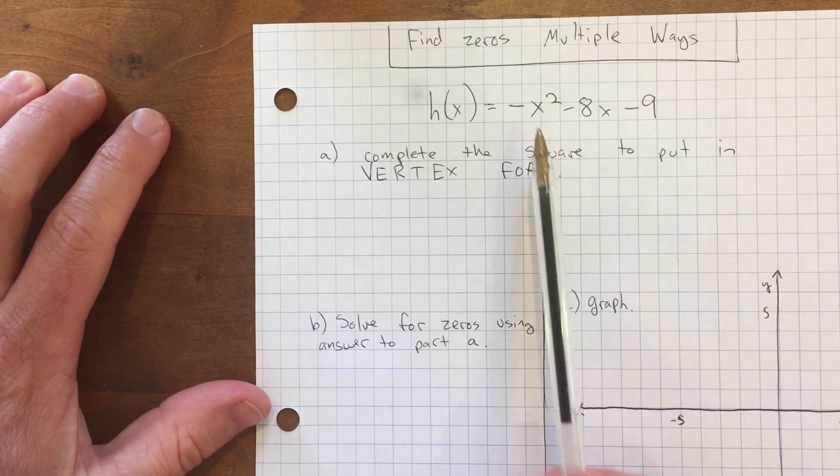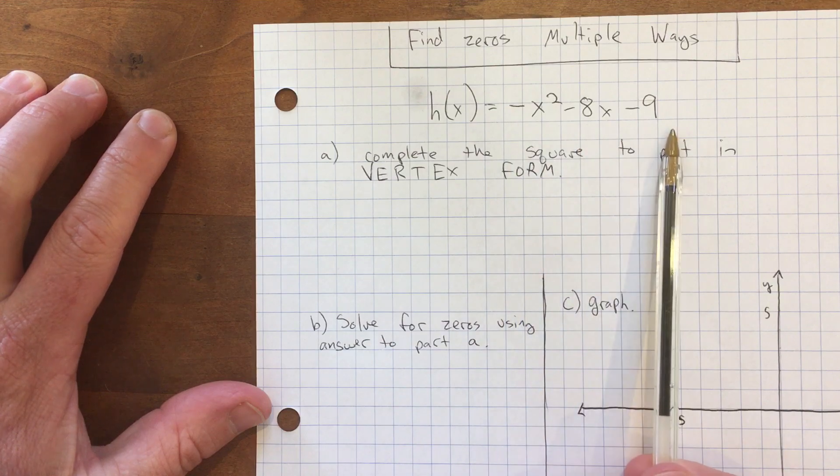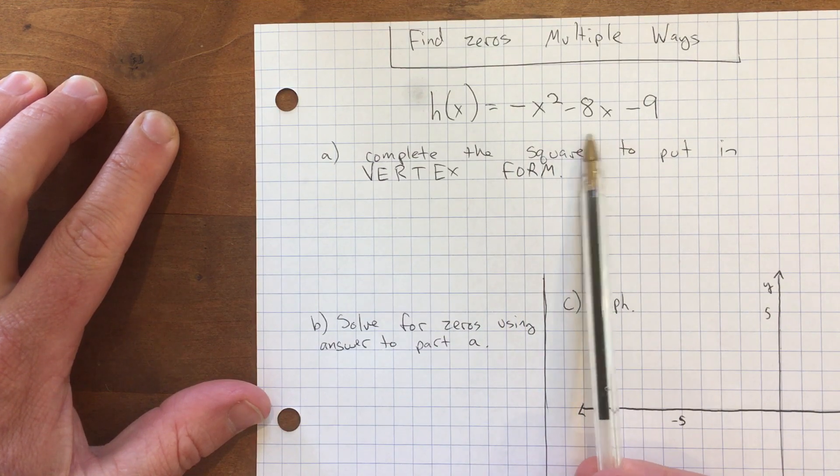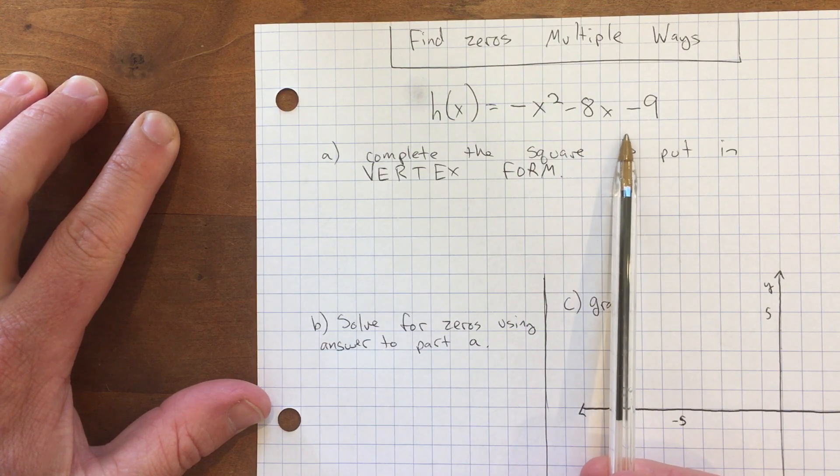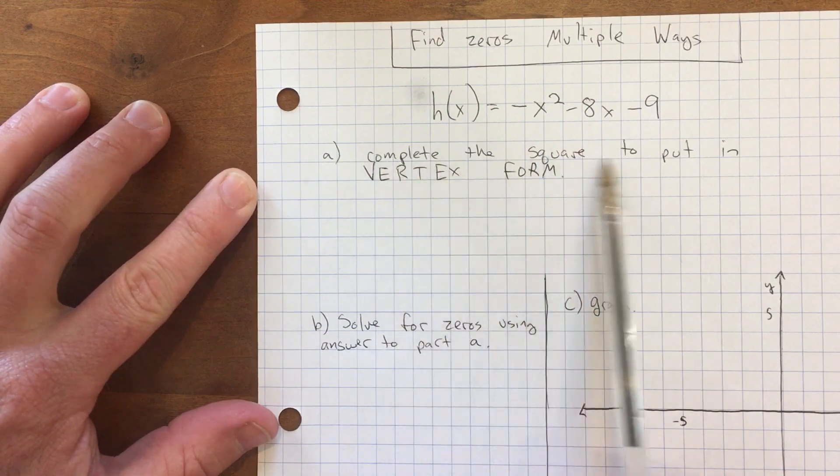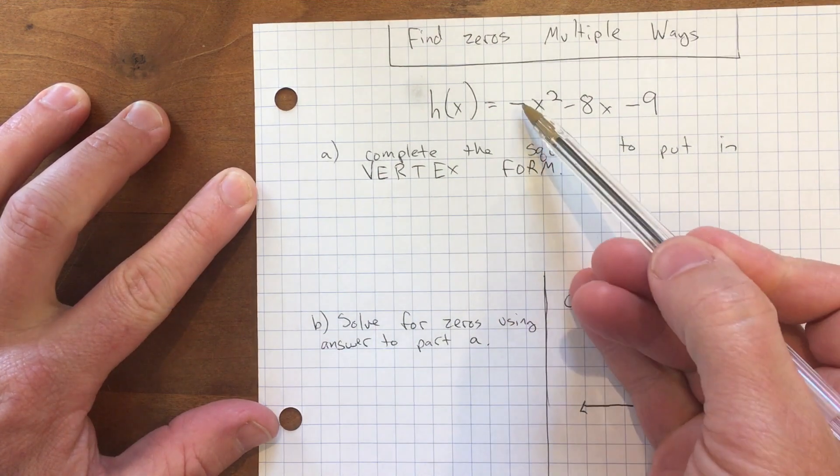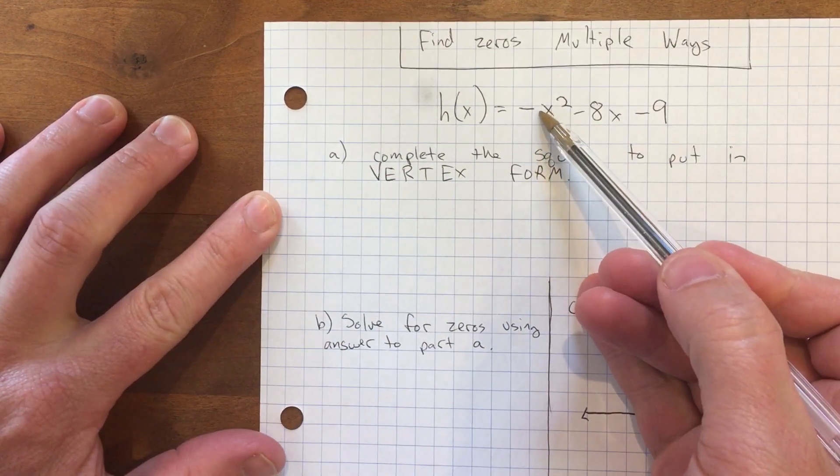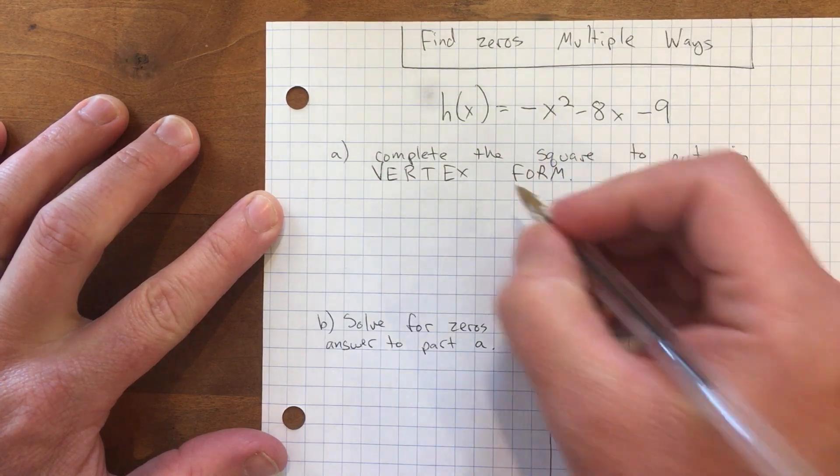I'll take this function h(x) = -x² - 8x - 9 and find the zeros. First I'm going to complete the square. Remember you can't complete the square unless there's a 1 in front of the x², and that's a negative 1, so I'm going to factor out the negative symbol first.